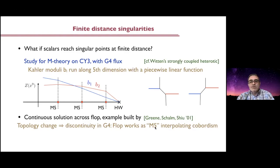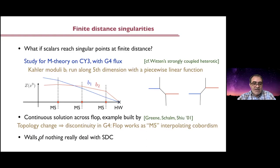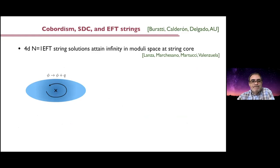It carries some kind of M5-brane charge — it's a wall of something, an interpolating wall between the theory at two different values of the G4 flux. There is no end of the world at this singular point in moduli space. The lesson is that if you really have a wall of nothing, this is dealing with points at infinity in moduli space. It really has to do with things related to the swampland distance conjecture — not the physics of finite distance in moduli space, but rather of infinite distance in moduli space.